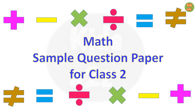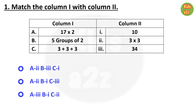Math sample question paper for Class 2. Let us start the questions. Question 1 is match the column 1 with column 2. First question in column 1 is 17 multiplied by 2, that is 34, so we need to match A with 3. Here we can see 5 groups of 2, that means 10, so we need to match B with 1. The correct answer is option 3, that is A3, B1, C2.